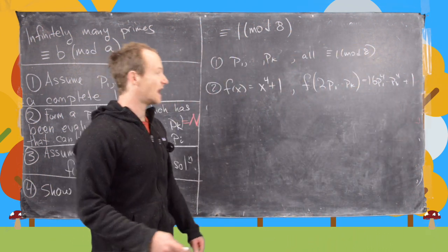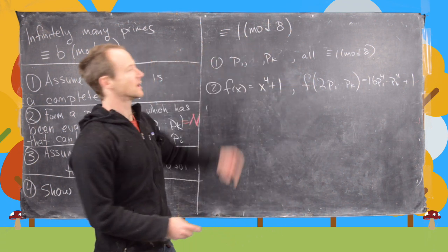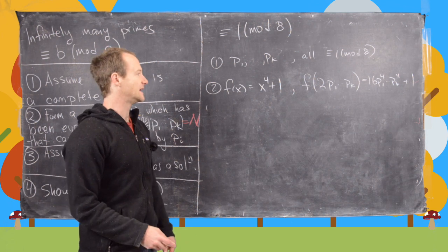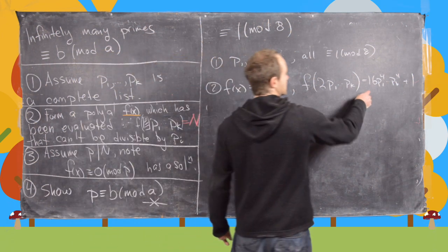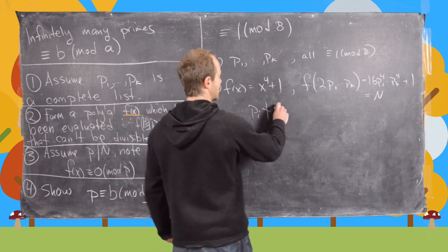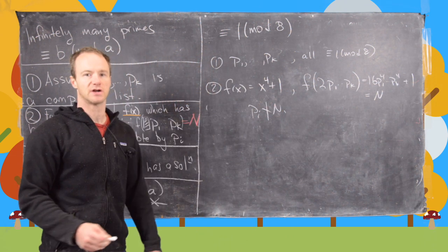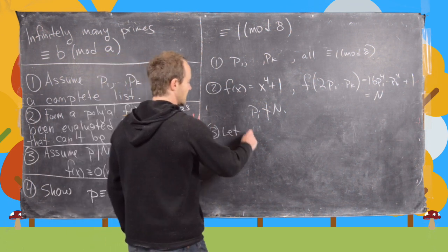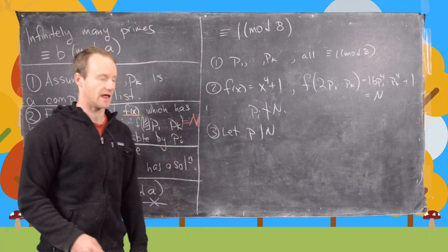Now it's not too hard to see that that is congruent to 1 mod 8 and it's impossible for pi to divide any of those or sorry any of the pi to divide this. So let's just write that down: pi can't divide n. But then so let p be some prime dividing n.